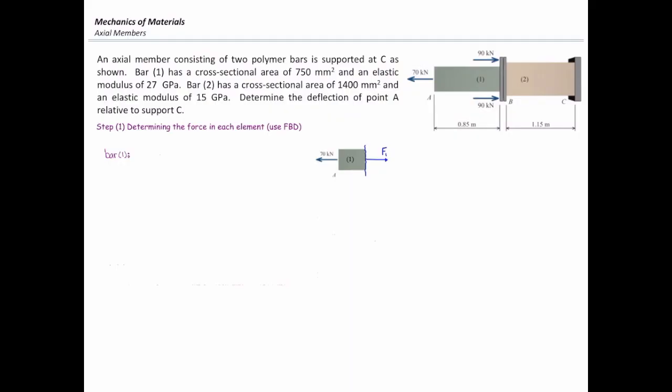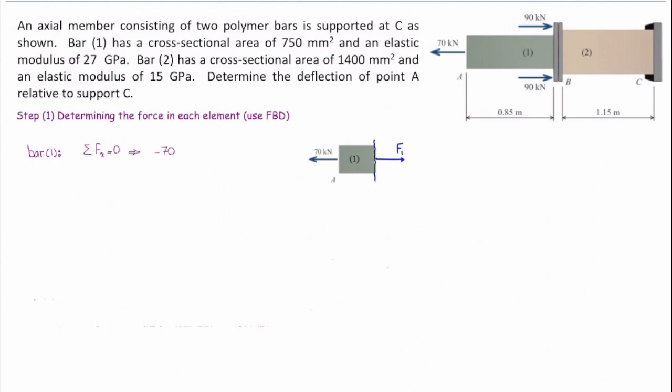Now, the simple part is determining the internal force, which is using the sum of the forces in the x direction. So, negative 70 plus F₁ is zero, and that gives me F₁ equal to 70 kilonewtons. Here, 70 kilonewtons got a positive sign, which means that force is tension.